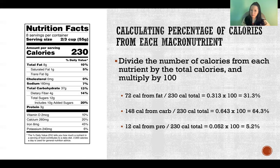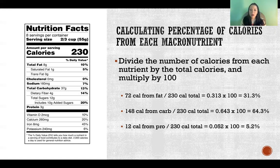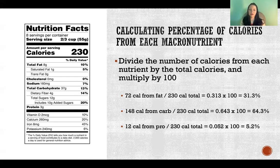You can use the same exact process — the same math I showed on the last slide — to calculate your percentages for your whole day of calories. I used this one food as an example, but if you're keeping track of how many grams you're eating of fat, carbs, and protein over the course of the entire day, you can convert those grams into calories and find the percentages coming from each macro for your entire day using the exact same math.